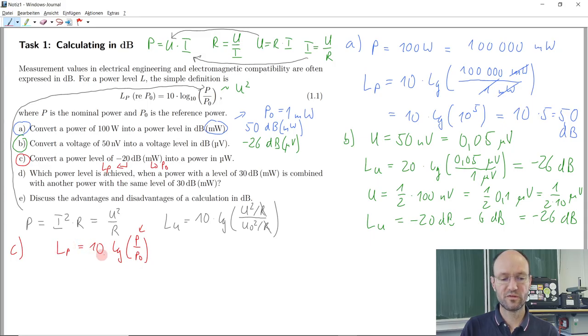What do we do with this equation to find the power? We can invert the logarithm, but before, what might be a good idea to do before inverting the logarithm? Get rid of the 10. So let's divide by 10 first. So the 10 here is gone, and we have 1 over 10 on the other side.